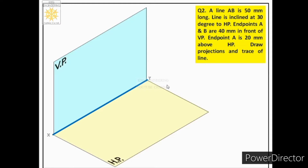Let us understand this case through the pictorial view. The endpoints A and B are 40 mm in front of VP and endpoint A is above HP. He has used these two words: in front, above. That means the quadrant of the problem is first, so in the pictorial view the first quadrant is shown.